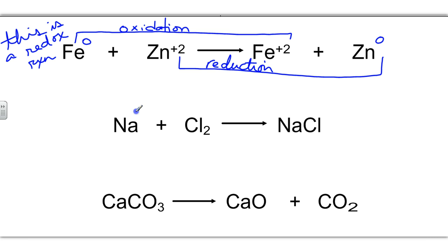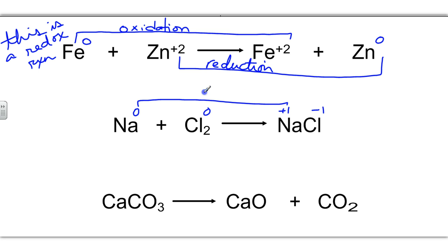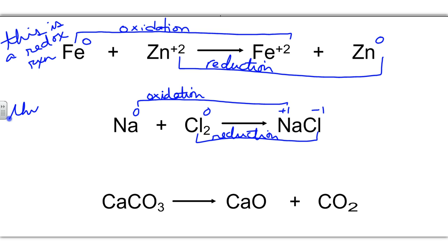Let's look at another example. Sodium here is neutral, so it gets a zero. Chlorine, even though it's a diatomic, is still neutral and gets a zero. We know sodium is in group one, so it gets a plus one charge, and chloride is minus one. Since sodium changed from zero to plus one, its oxidation state increased, which means this is the oxidation part of the reaction. Chlorine went from zero to minus one, so since the oxidation number reduced, this is the reduction part. This is also a redox reaction.